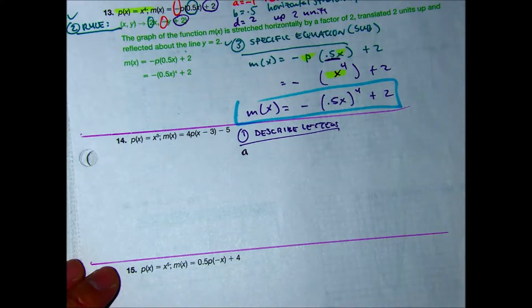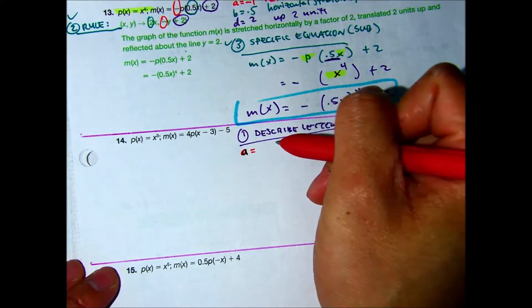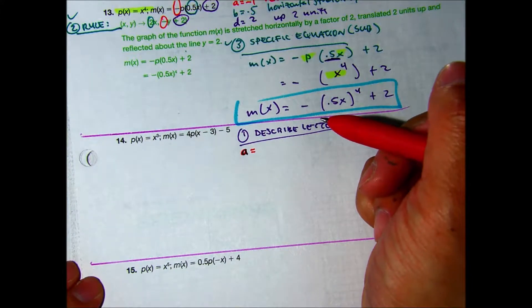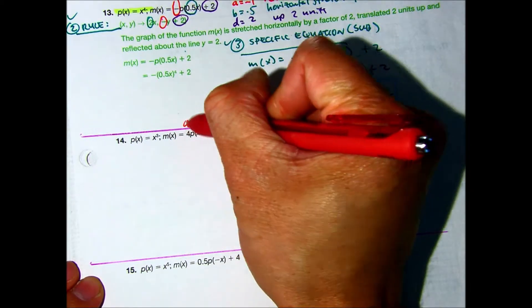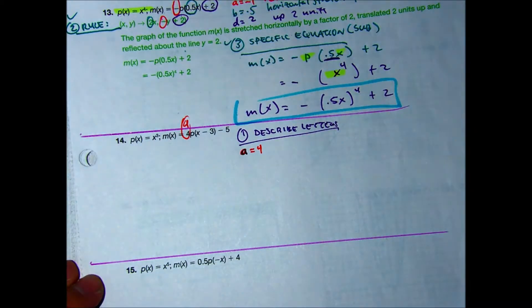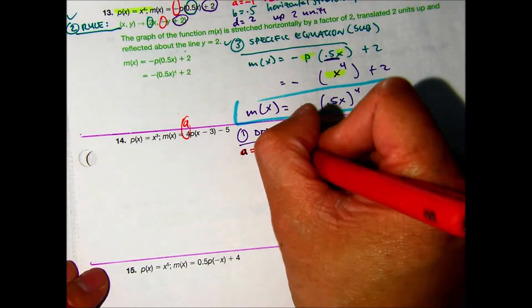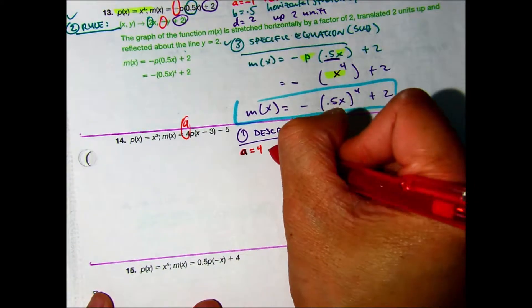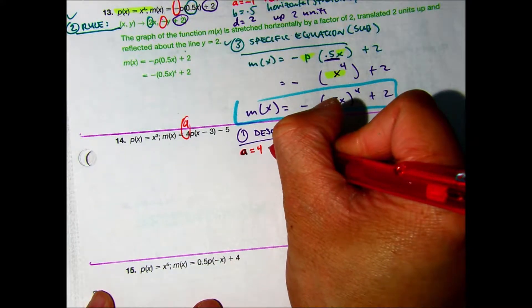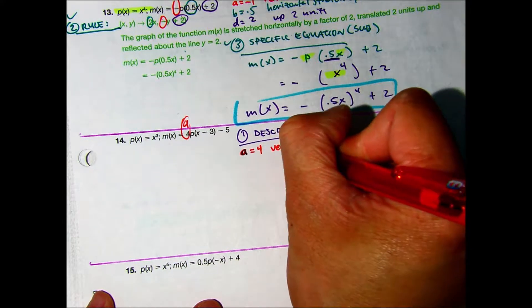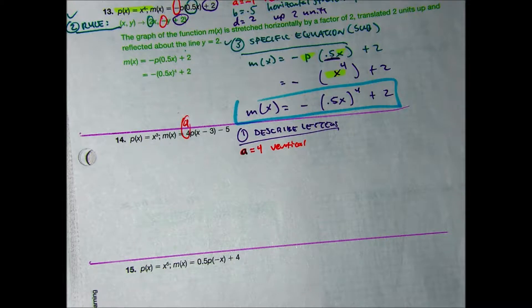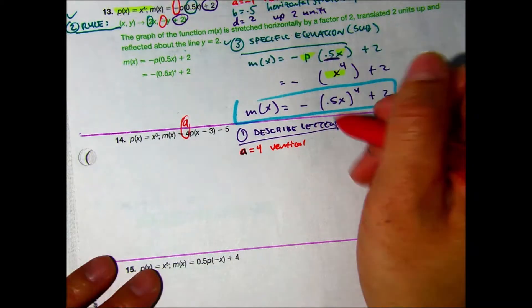What is your A value? A is four. What does that do? Vertical or horizontal? Vertical what? Stretch or compression? Or stretch? Stretch is correct.